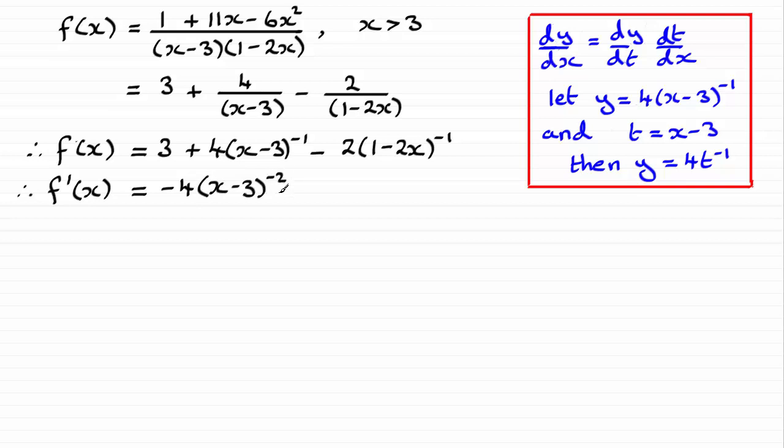Then we need to multiply it with dt by dx. Differentiate what we call t, which was x minus 3, differentiate that with respect to x. The differential of x minus 3 with respect to x is just going to be 1. So what I'm trying to show you here is how I would do it without really writing this out. That's how I'm thinking about it.